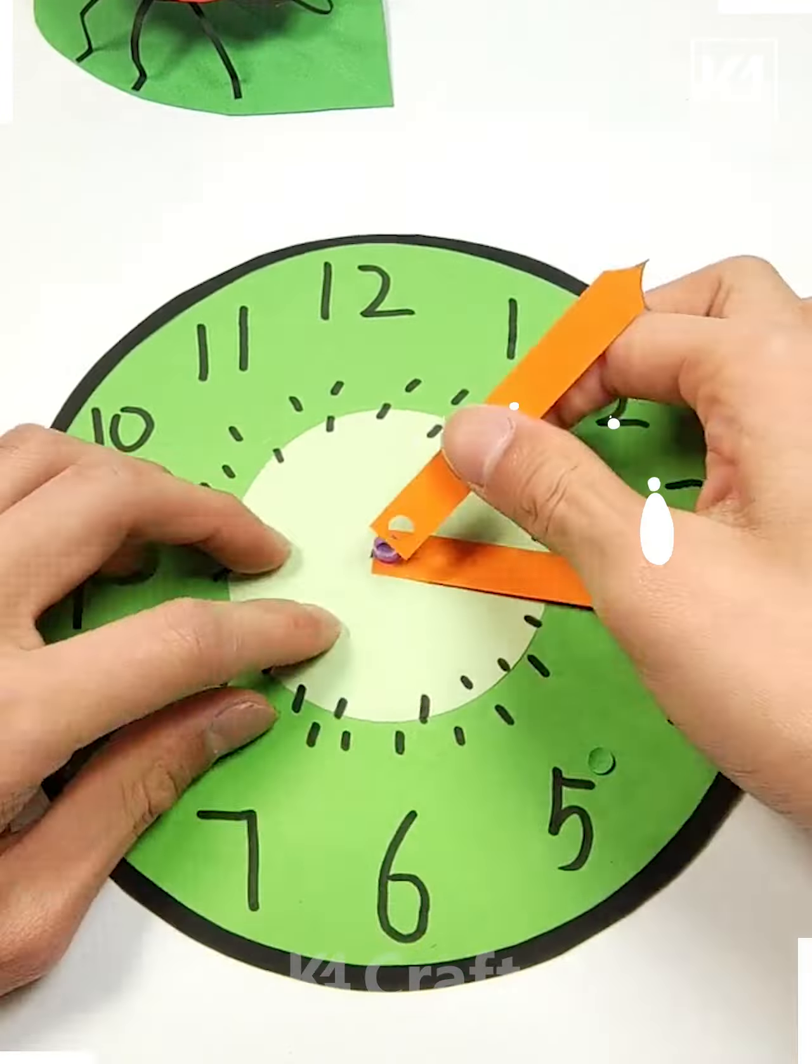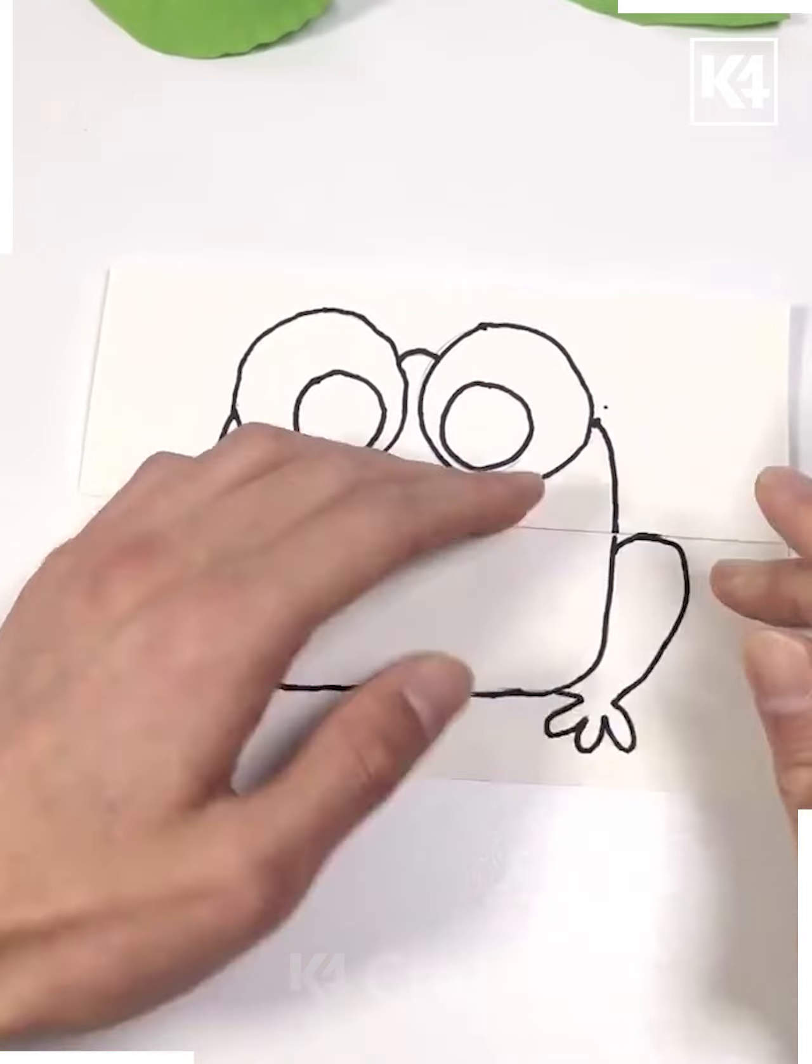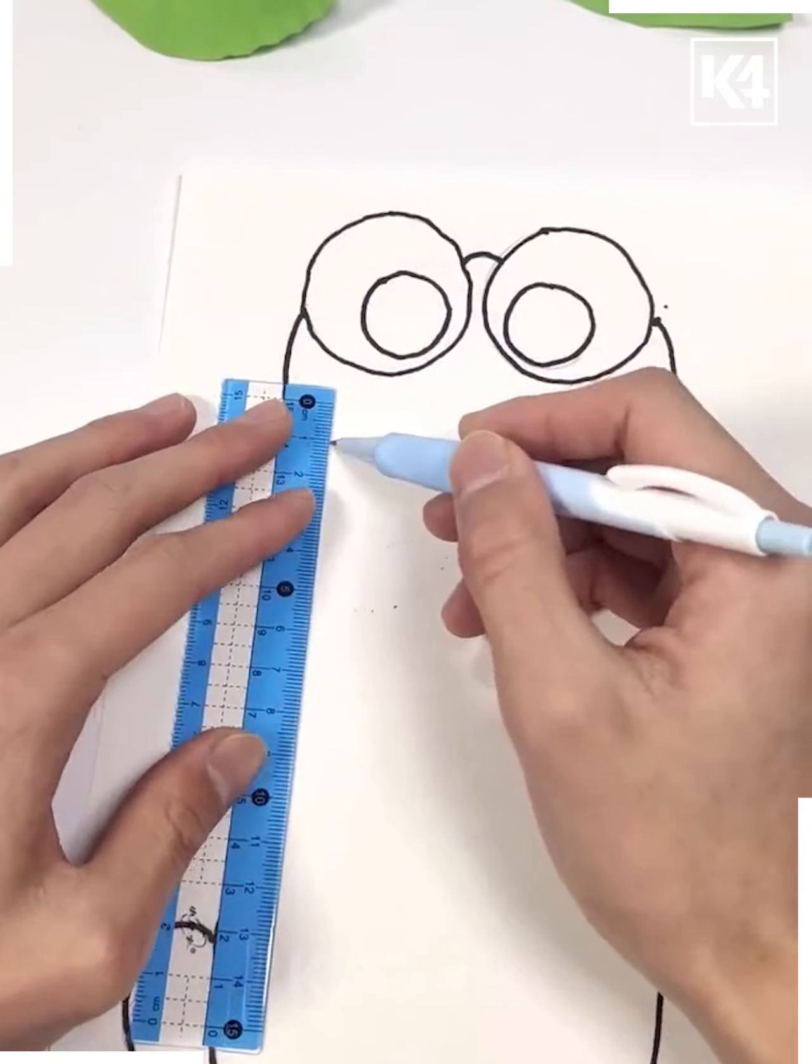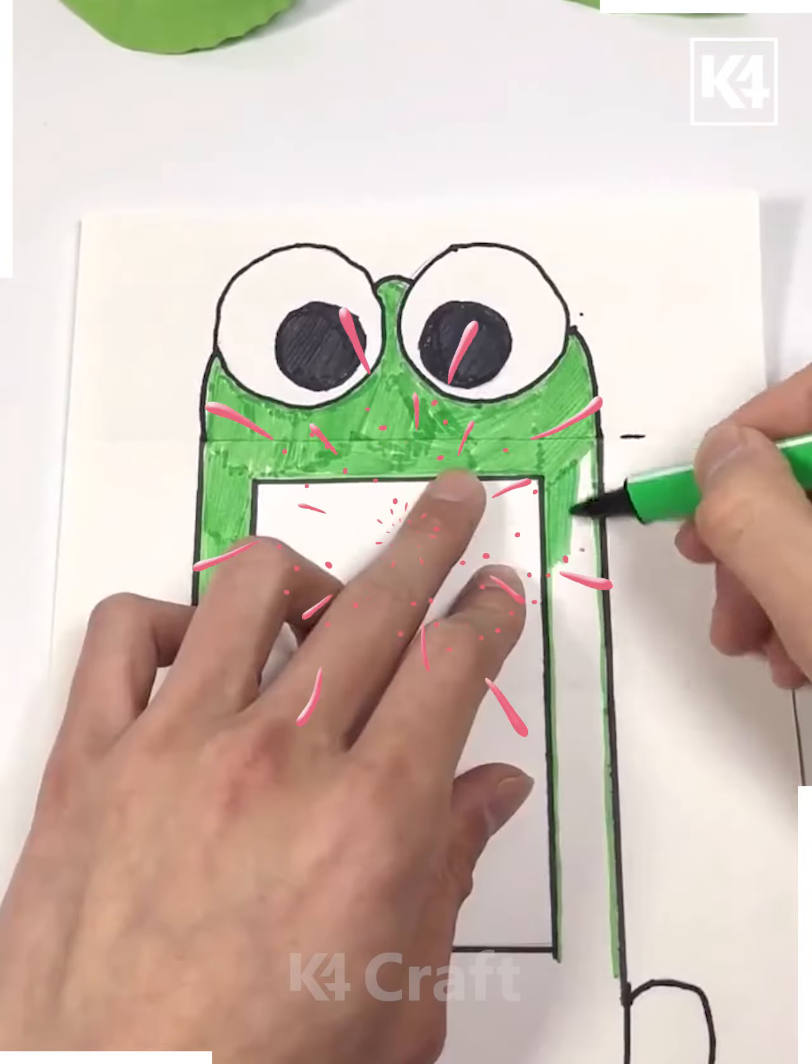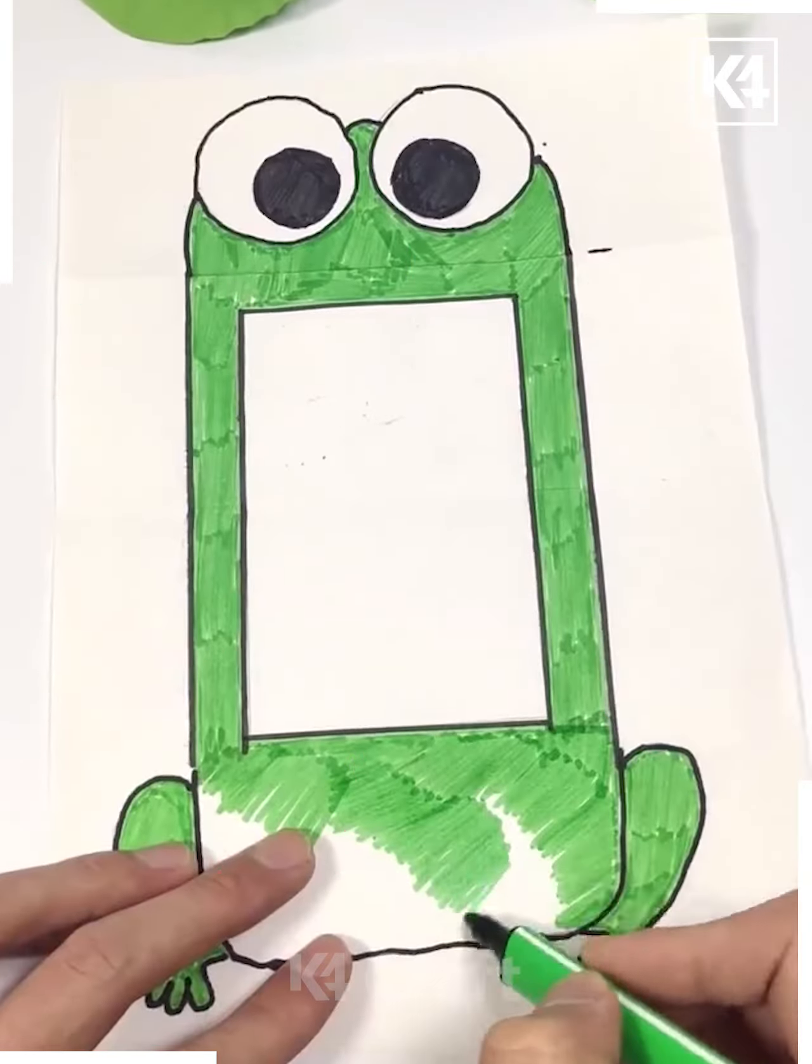Let's move ahead. Here we are making a frog on paper with a marker as you can see. Then we have made a rectangle in between, colored it to work as a tongue, and pasted a fly on it.